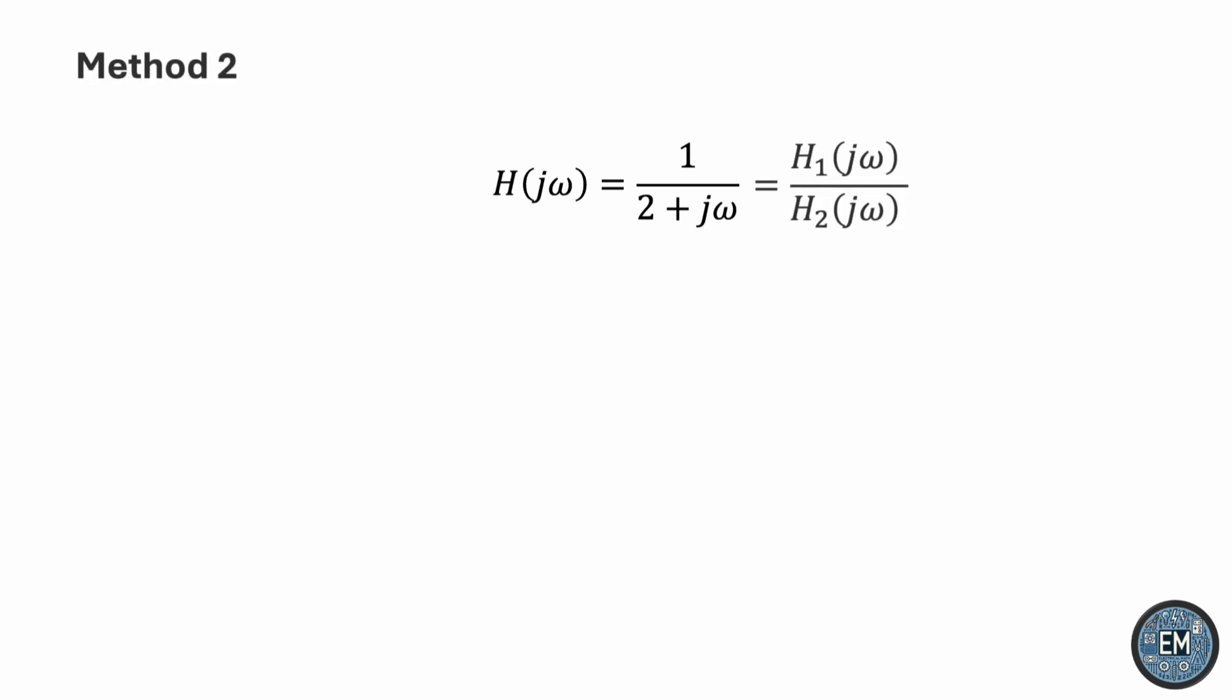In this method, you'll think of your system as h1 over h2. Then the magnitude would simply be the quotient of magnitudes, and the phase would be the difference of phases.